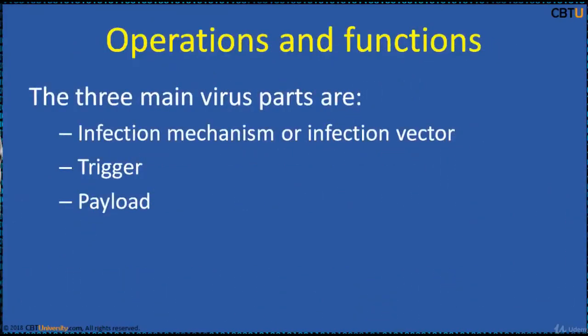A virus typically has a search routine which locates new files or new disks for infection. The three main virus components are: Infection Mechanism, or Infection Vector — this is how the virus spreads and propagates. Next is Trigger.